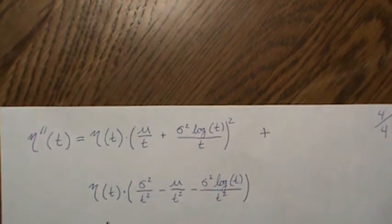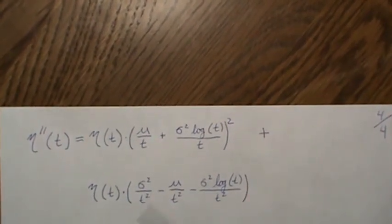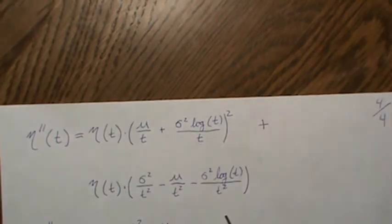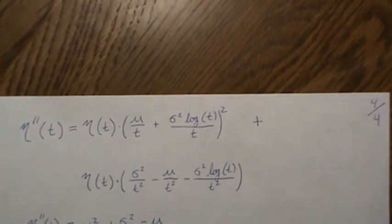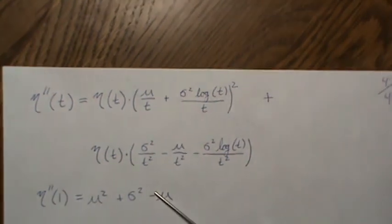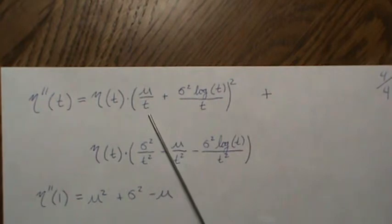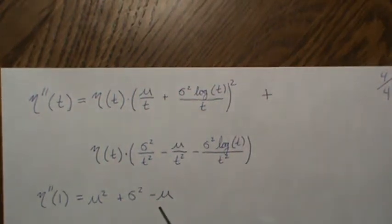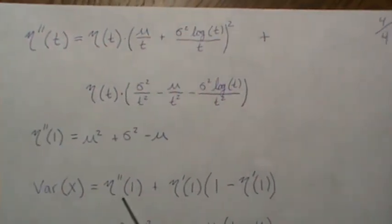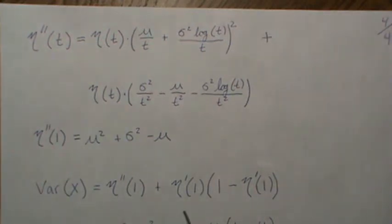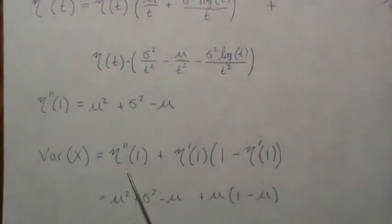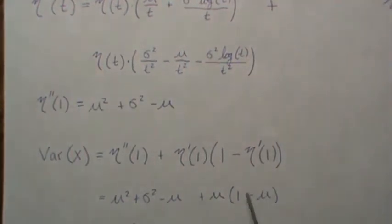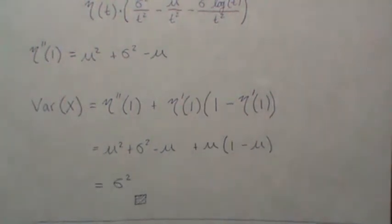Taking the second derivative of eta and evaluating at t equals 1: one term gives mu squared, another gives sigma squared, and one gives minus mu. So the second factorial moment is mu squared plus sigma squared minus mu. To calculate the variance, we use the second derivative of eta evaluated at 1, plus the first moment, minus the mean squared. Combining these terms gives sigma squared — the known variance of the normal distribution.